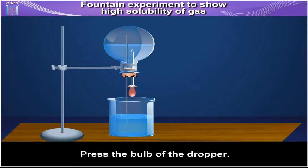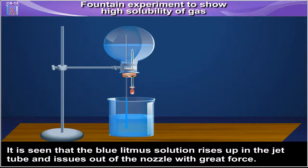Press the bulb of the dropper. It is seen that the blue litmus solution rises up in the jet tube and issues out of the nozzle with great force.